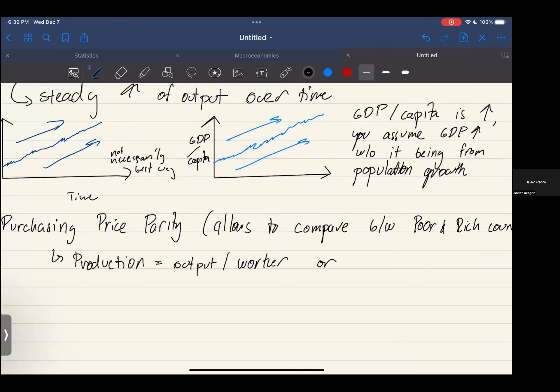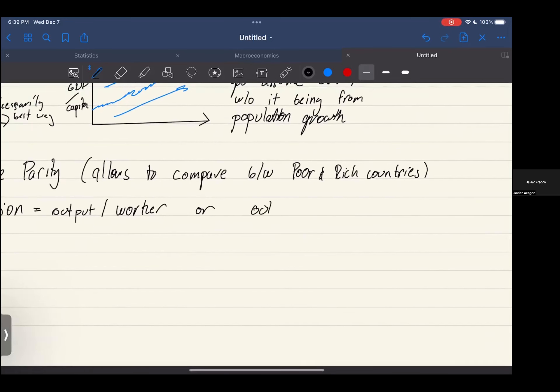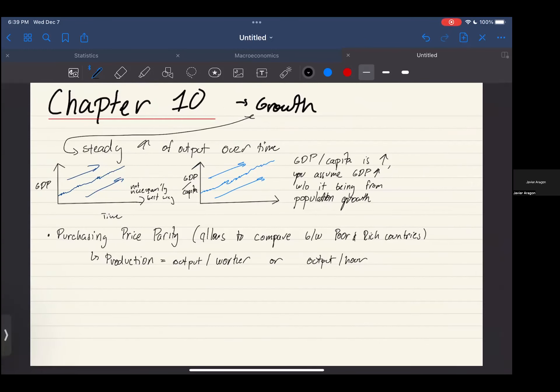This can mostly be seen through production. This usually is measured in either output per worker or output per hour. Those are the two ways.